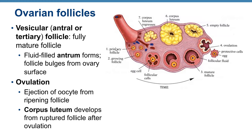Starting with the primordial or primary follicle, the follicle grows into a secondary follicle, then a tertiary follicle. The tertiary (vesicular or antral) follicle is fully mature and has an antrum — a fluid-filled space inside the follicle. You can see the primary follicle, secondary follicle, and then spaces filled with fluid that unite to form the antrum.